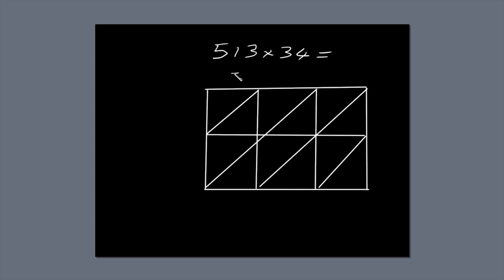Next, write the first number, 513, along the top of the box so each digit lines up with a column. Write 34 down the right-hand side of the box so each digit lines up with a row.